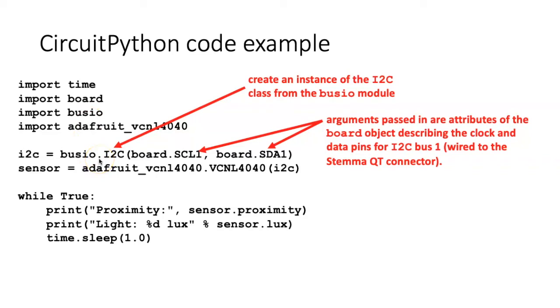And in order to create that, we have to tell the code which of the board connections we want to use. As I said before, if we want to use the wired StemmaQT connector, we have to say that we want to use the SCL1 and the SDA1 connections on the board. And that indicates that we're using the I2C bus number one. So we pass that information in. It creates an I2C instance, which we've called i2c.